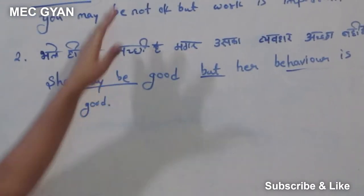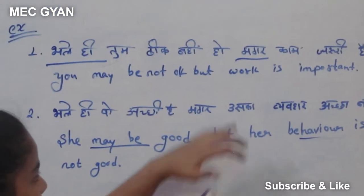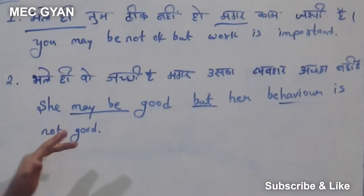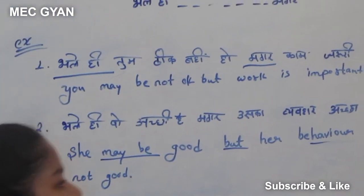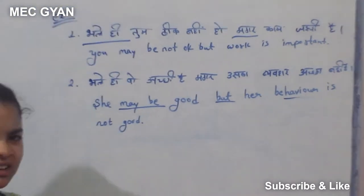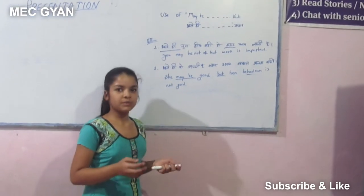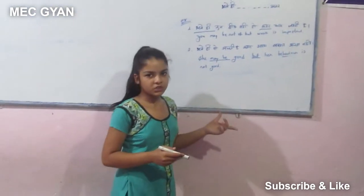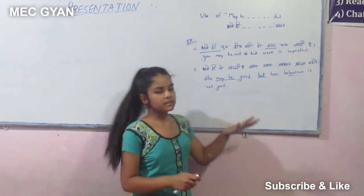You can see 'maybe' here and 'but' here. This kind of sentence you can make like this: 'She may be good, but her behavior is not good.' Another example: 'He may be intelligent, but he can't solve this question.' You can make many sentences like this.